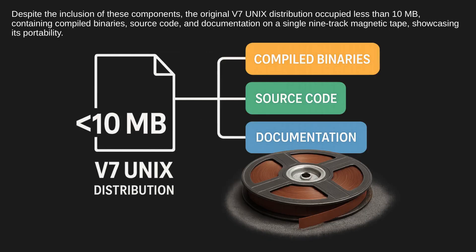Despite the inclusion of these components, the original V7 Unix distribution occupied less than 10 megabytes, containing compiled binaries, source code, and documentation on a single nine-track magnetic tape, showcasing its portability.